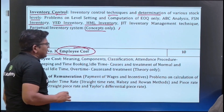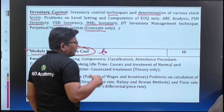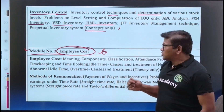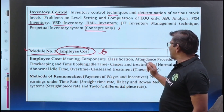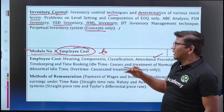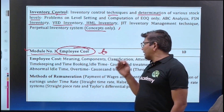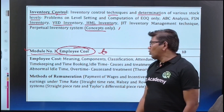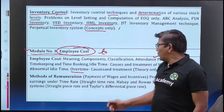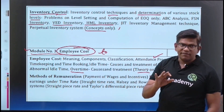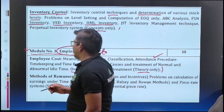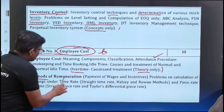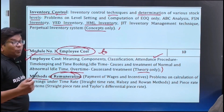Next is employee cost — a very important topic. Employee cost means labour cost, where we are going to deal with salaries and wages. This covers components and classification of labour cost, attendance procedure, time keeping, time booking, idle time — causes and treatment of normal and abnormal idle time — and overtime. These are theoretical parts which we will cover in a very disciplined and systematic manner.